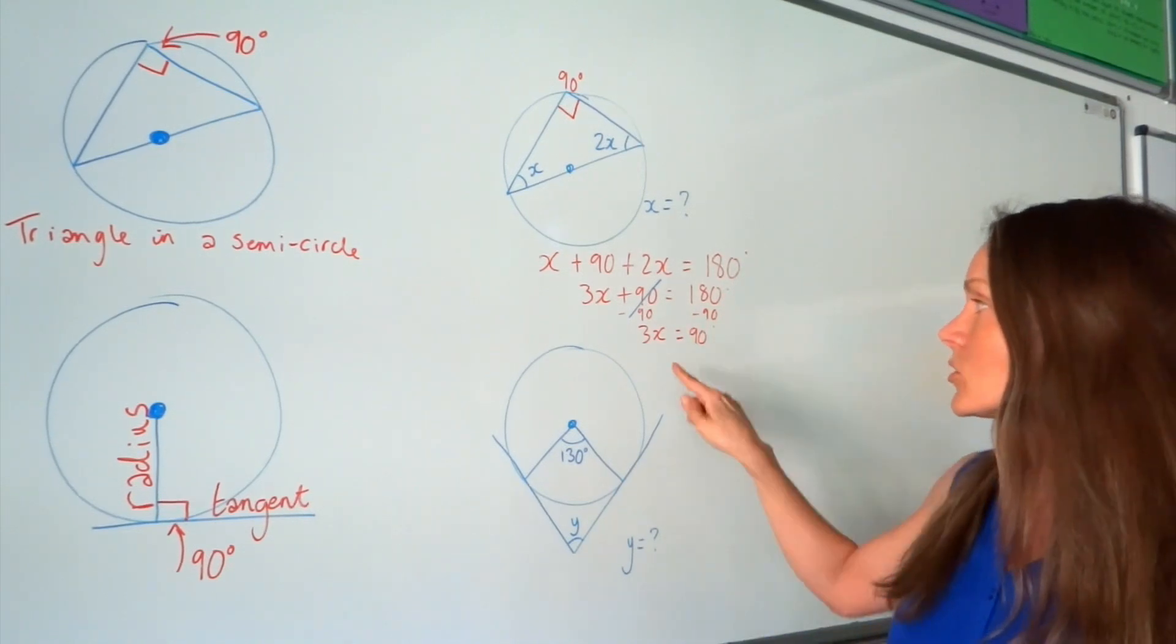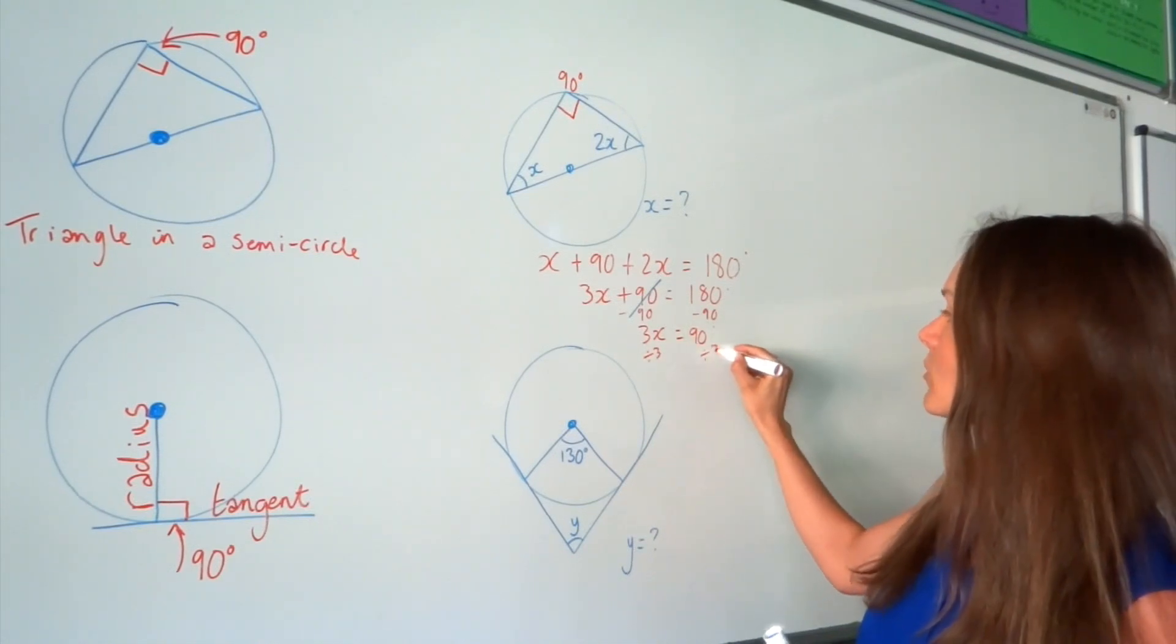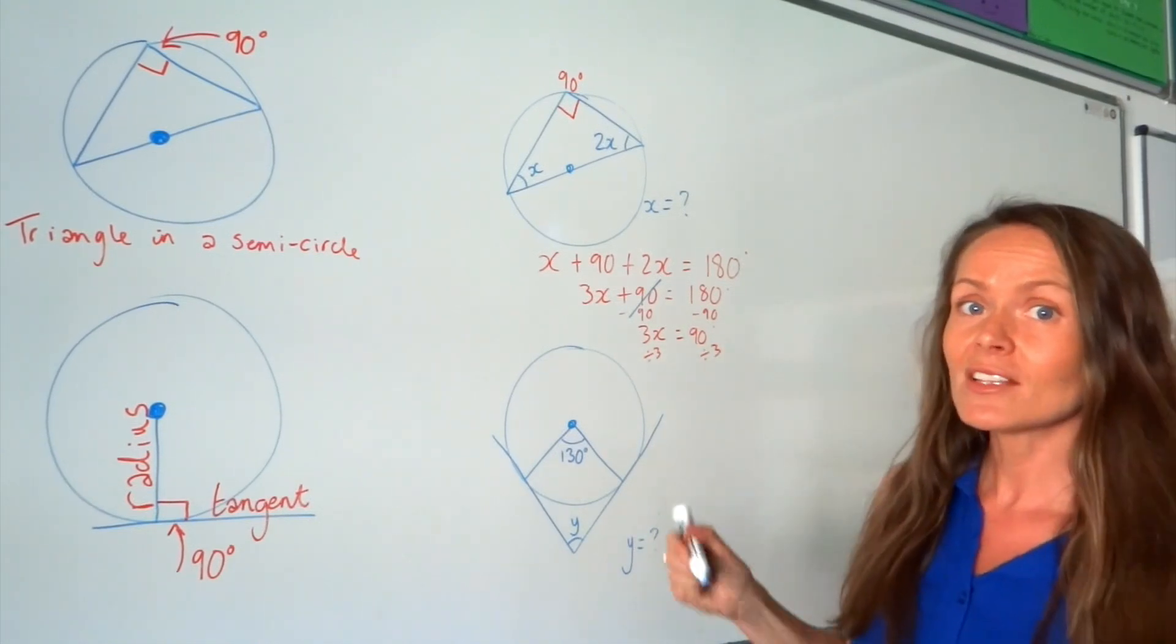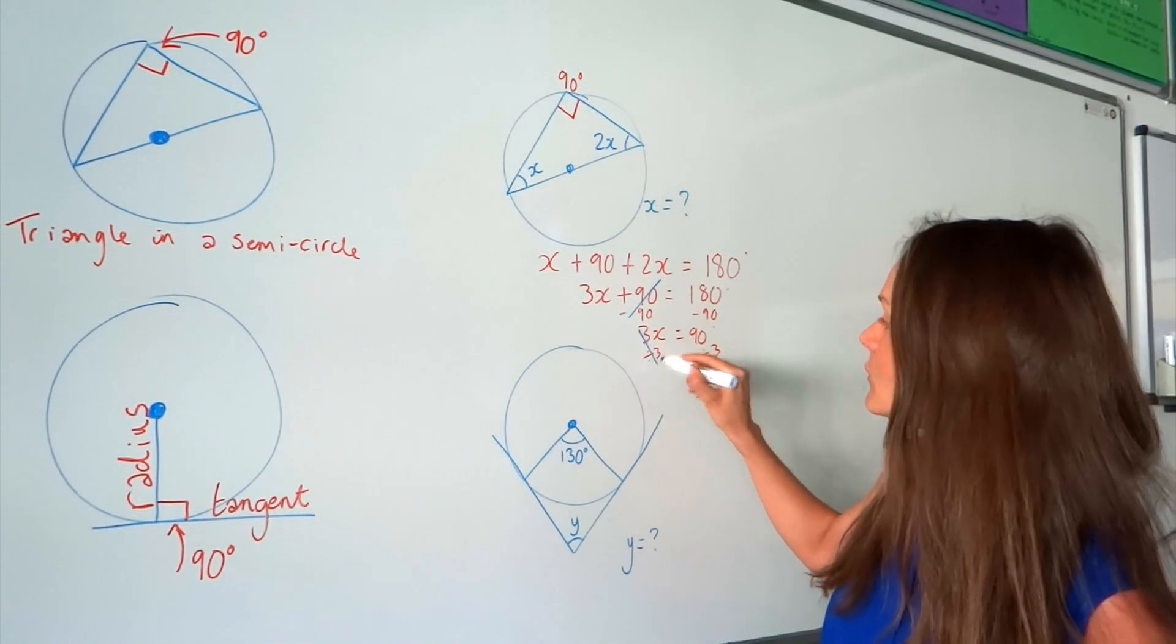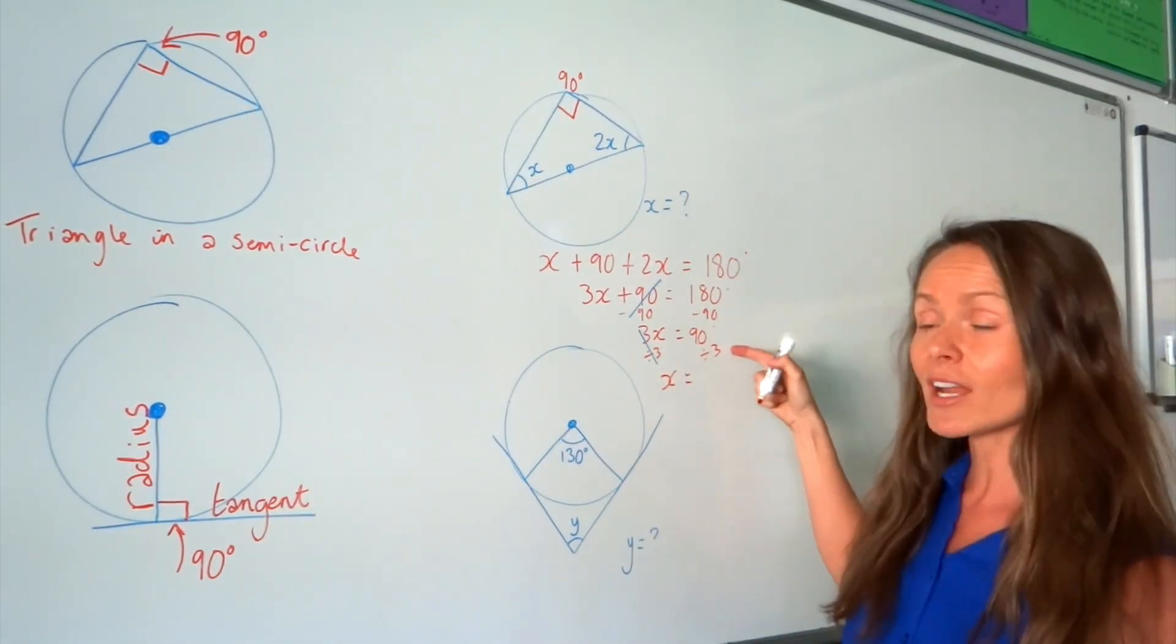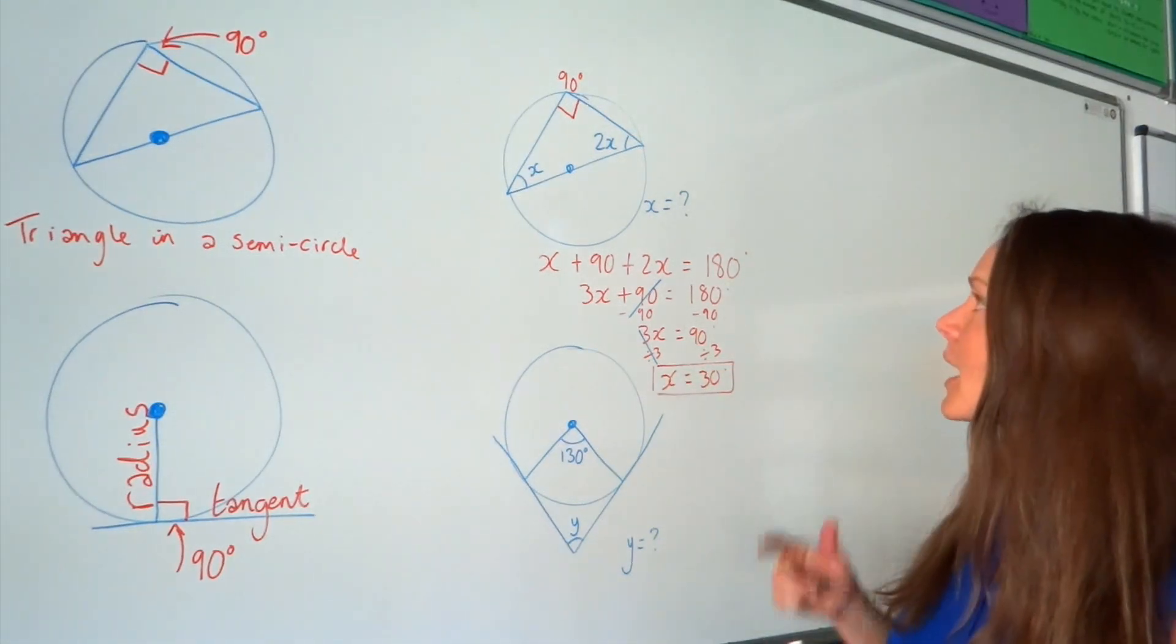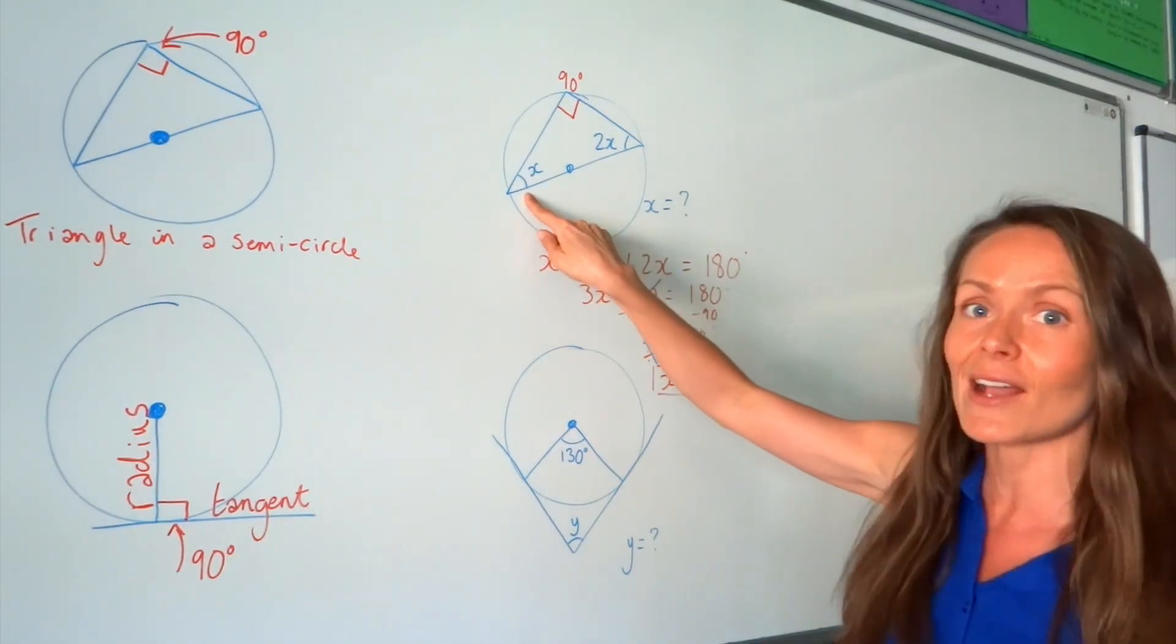And on the right hand side, I'm left with 90 degrees. So, the last step is to remove that 3. So, I need to divide by 3. Remember to do the same thing on both sides of the equation. So, 3 divided by 3 leaves me with 1X. And on the right hand side, 90 divided by 3 is 30 degrees. So, I've solved that equation and I've found the value of this angle here.